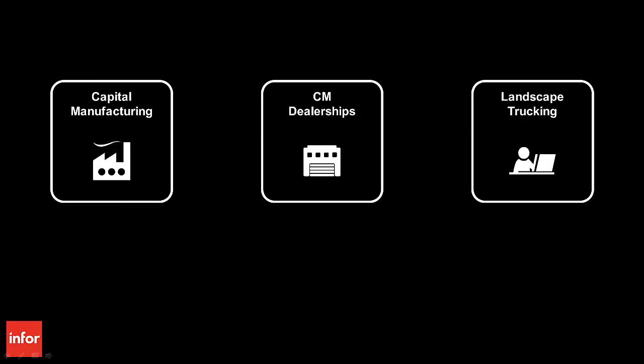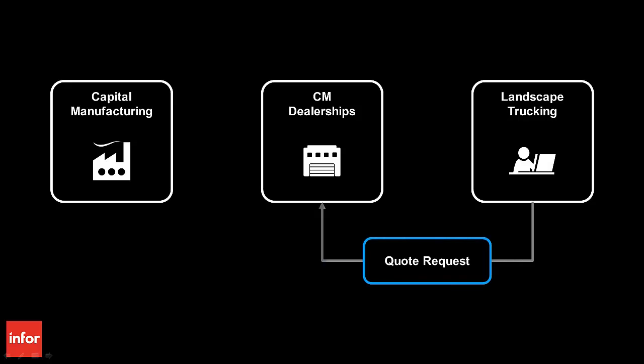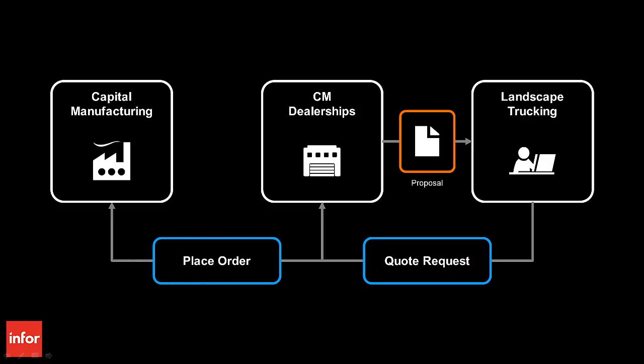We have now seen how Capital Manufacturing leverages Infor Product Configuration Management to enable CM Dealerships, and in fact all of their dealers, to quote, propose, and order Capital Manufacturing products. Capital Manufacturing has become easier to do business with by providing fast, easy-to-use tools to their dealers, improving their win rates with accurate, complete, and personalized proposals.